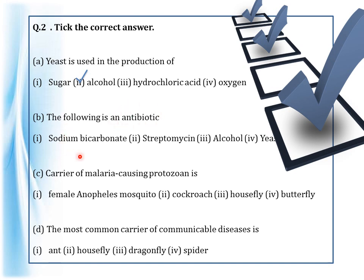The next question: the following is an antibiotic — sodium bicarbonate, streptomycin, alcohol, or yeast? Yeast is a microorganism, alcohol is not an antibiotic, and sodium bicarbonate is a preservative. So the answer is streptomycin. The carrier of malaria-causing protozoan is — female Anopheles mosquito, cockroach, housefly, or butterfly? We know butterfly and cockroach are not the answer. Housefly causes bacteria in food and causes diseases like tuberculosis and cholera. So the answer is female Anopheles mosquito.